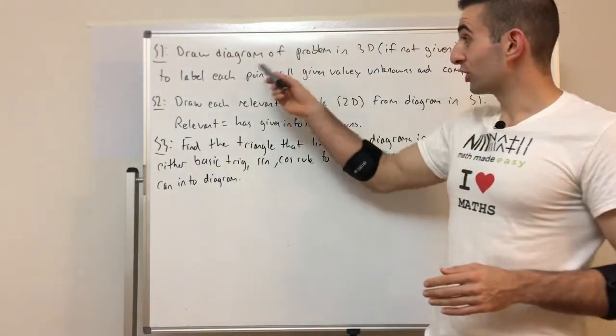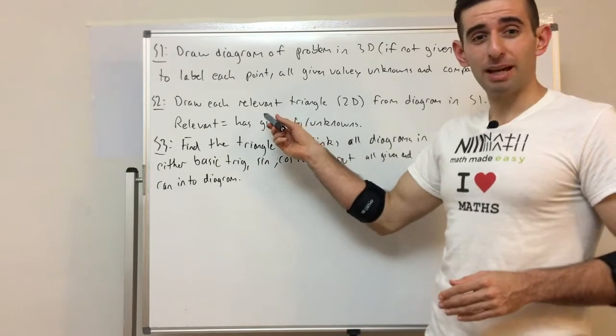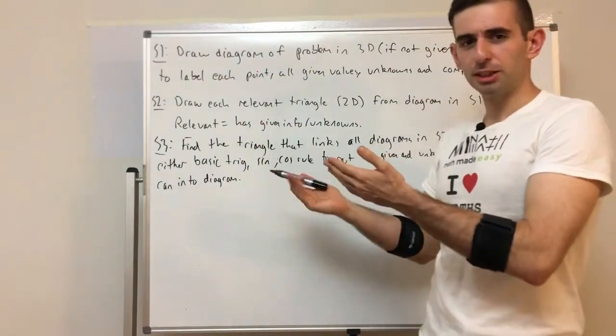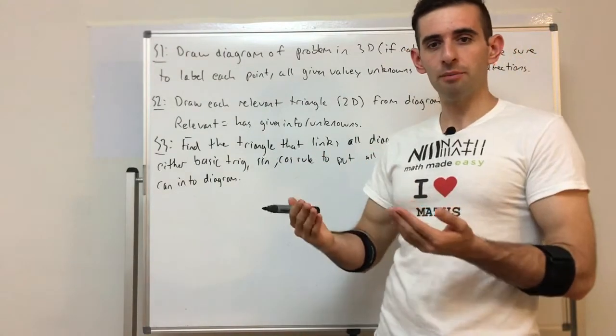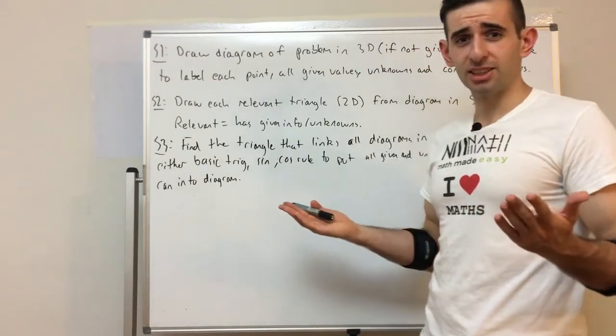This is why it's important to label each point, because if you label each point you'll be able to see which triangles link properly, which sides and angles go together. And then it's just a combination of basic trig like your SOHCAHTOA or the sine and cos rule—they're the only things we've got to find sides and angles.